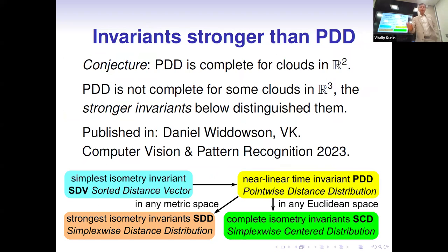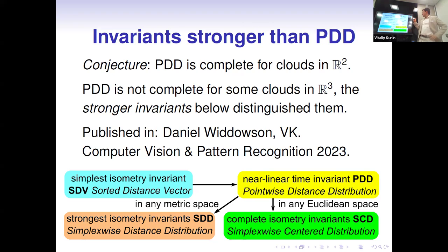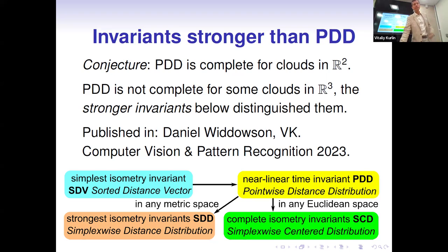For completeness: it is our conjecture that PDD is complete for clouds in the plane — we have distinguished all known counter-examples in the plane, but no proof yet. In three-dimensional space, other researchers have found explicit counter-examples showing that PDD is incomplete, because in three dimensions there is much more space to arrange points with equal distances.